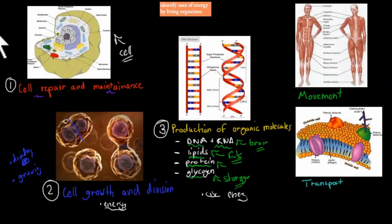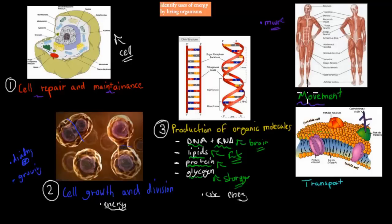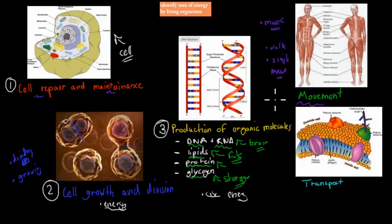Next is movement, which should be a straightforward one. We have lots of muscles in our body and these muscles move constantly. We obviously walk around, but we also just generally move — every single movement requires energy. So the fourth use of energy is movement.